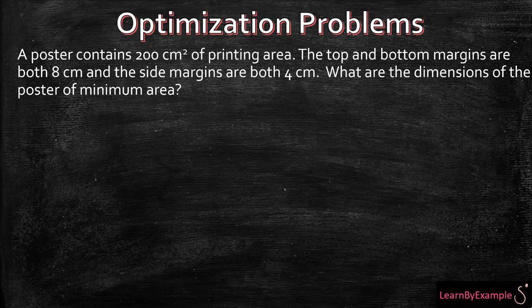So a poster contains 200 centimeters squared of printing area. The top and bottom margins are both 8 centimeters and the side margins are both 4 centimeters. So what are the dimensions of the poster of minimum area?